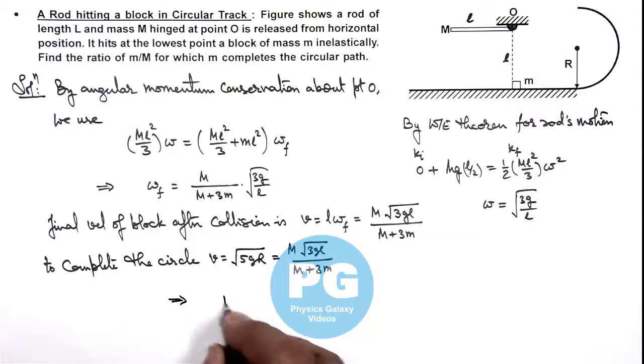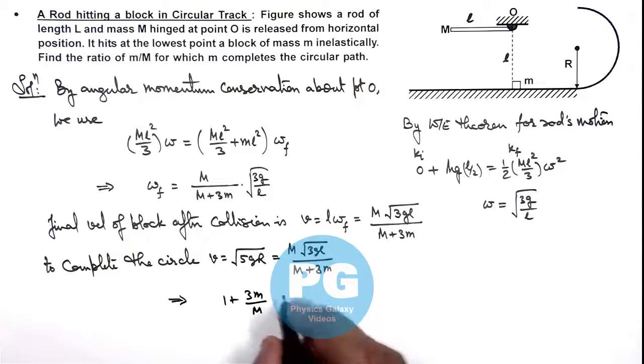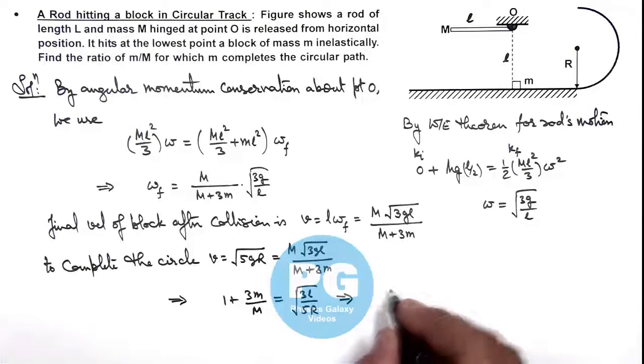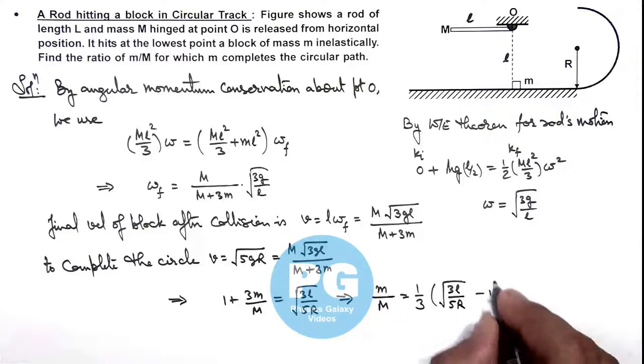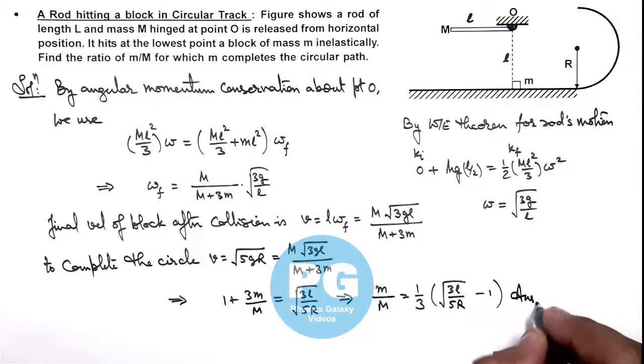This gives us 1 plus 3m by M is equal to root of 3L by 5R minus 1, that is the result of this problem.